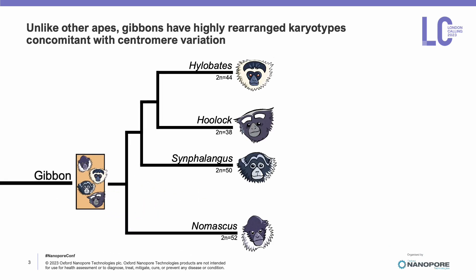However, if we zoom into just the karyotypes of gibbons, they have a significant amount of variation present. Among genera, chromosome numbers range from 2n equals 38 all the way up to 2n equals 52.